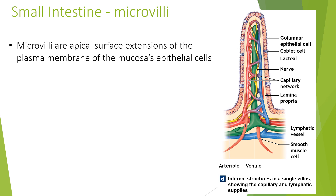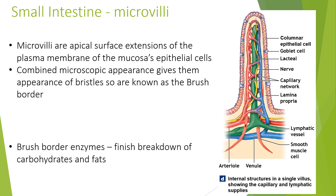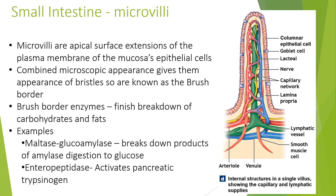Moving on to microvilli — these are apical surface extensions of the plasma membrane of the mucosa and epithelial cells. Their combined microscopic appearance gives them the look of bristles, known as the brush border. Brush border enzymes finish the breakdown of carbohydrates, hydrogen, and fats. Examples include maltase and glucoamylase, which breaks down products of amylase digestion to glucose, and enteropeptidase, which activates pancreatic trypsinogen.